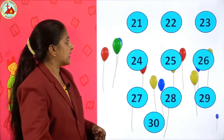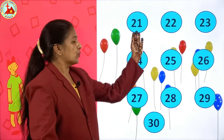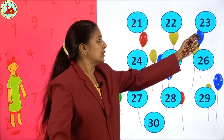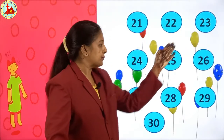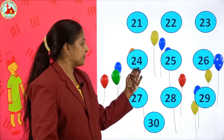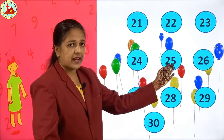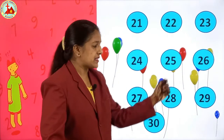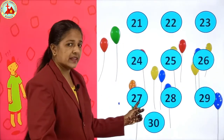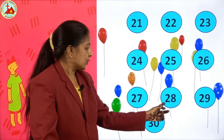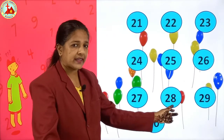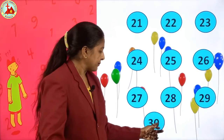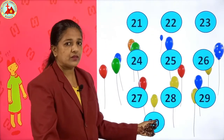After 20: 2-1, 21. 2-2, 22. 2-3, 23. 2-4, 24. 2-5, 25. 2-6, 26. 2-7, 27. 2-8, 28. 2-9, 29. And last 3-0, 30.